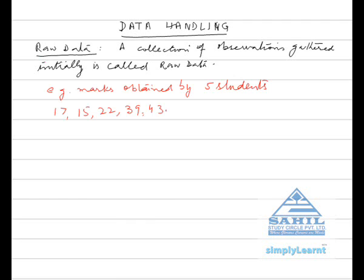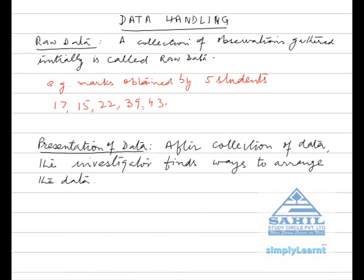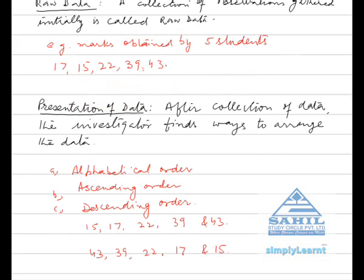They constitute data because they are all five numbers of the same type. Presentation of data: After collection of data, the investigator finds ways to arrange the data. The data collected can be arranged in various ways.